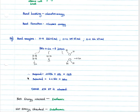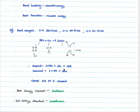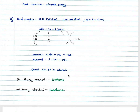The energy absorbed on the left is: 2 × 436 + 1 × 496 = 1368 kJ/mol. The energy released in bond formation is: 4 × 460 = 1840 kJ/mol. Using released minus absorbed: 1840 − 1368 = 472 kJ/mol released. Therefore this reaction releases 472 kJ/mol.